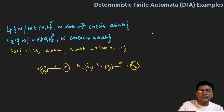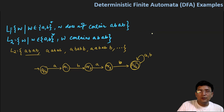Now, if I get a 'b' after q4, or if I get an 'a' after getting 'abab', that should not be a matter of concern. If I get any number of 'ab' after 'abab', that string will still be accepted.